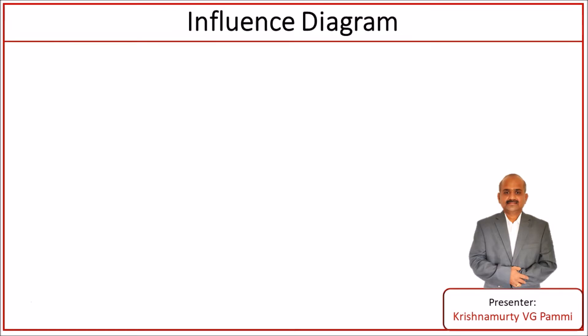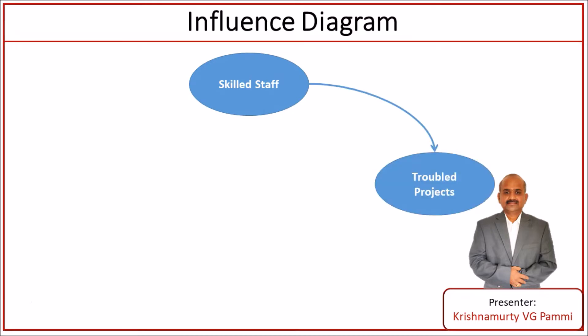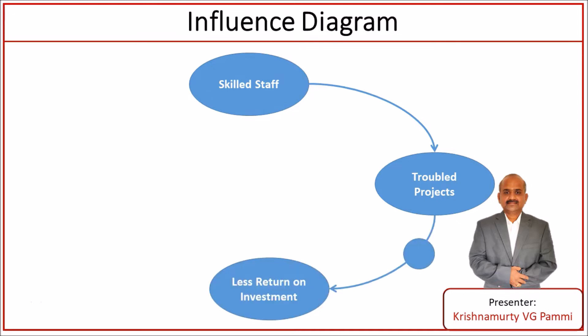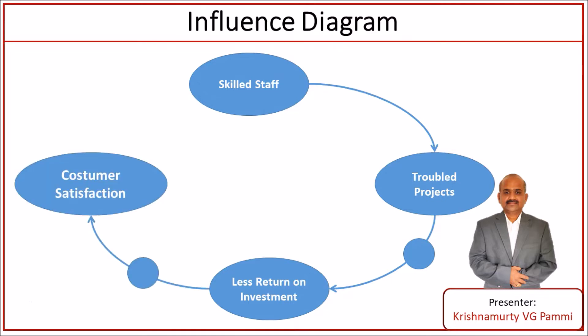Our first example is on a set of skilled resources. The moment we have skilled resources, management tends to assign them to troubled projects because troubled projects eat away most of management's bandwidth. That's why they want to assign skilled staff to complex or troubled projects. Often, troubled projects lead to less return on investment, and also to less or medium customer satisfaction.